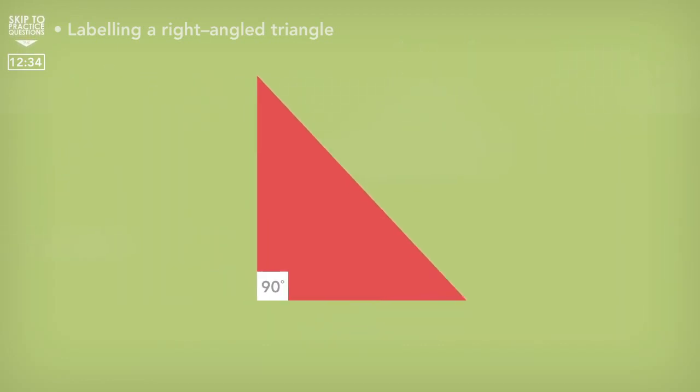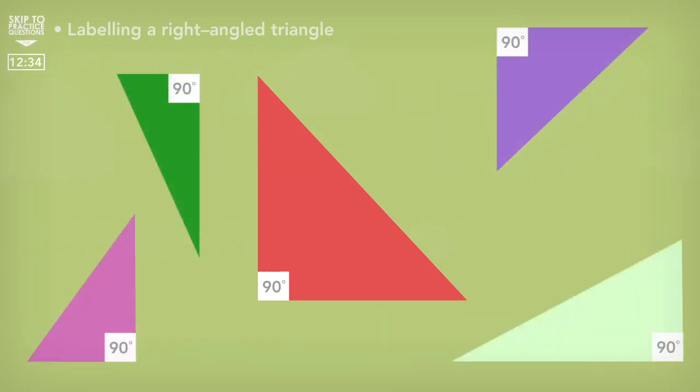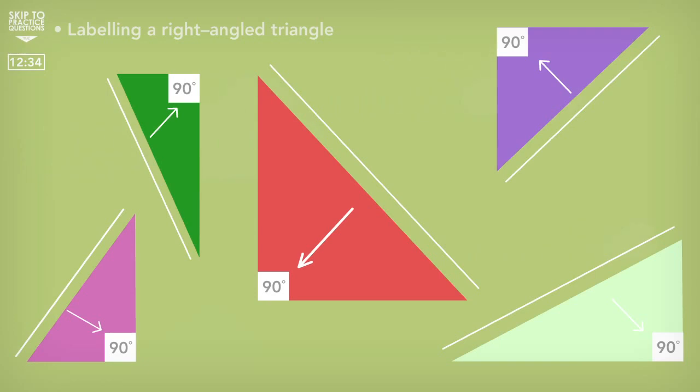Before explaining how this works we need a way of clearly identifying the different sides on the right angle triangle. On each of these right angle triangles we can clearly see that there is a side that is longer than the other two sides and this side will always be opposite the right angle. So as some of you may already know this side is always known as the hypotenuse.